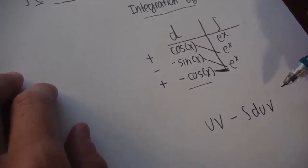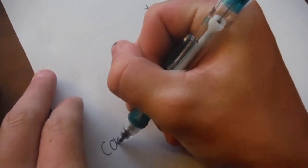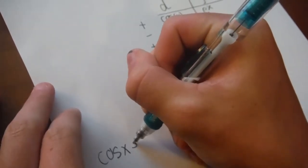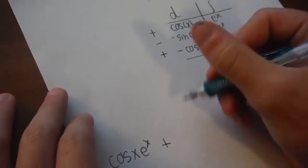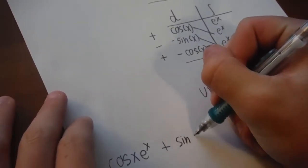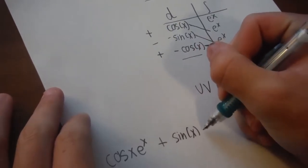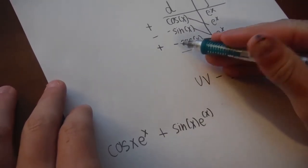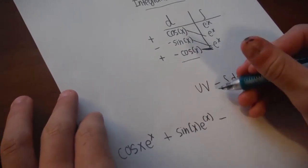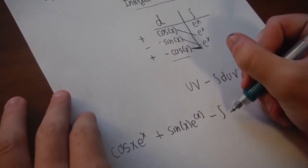So applying this to our problem, we will have cosine x times e to the x. This is a negative, but it's also a negative here, so this is going to be plus sine of x times e to the x. And then, this is positive, this is negative, so we're going to be minus, just like in our equation, minus the integral of these two things.